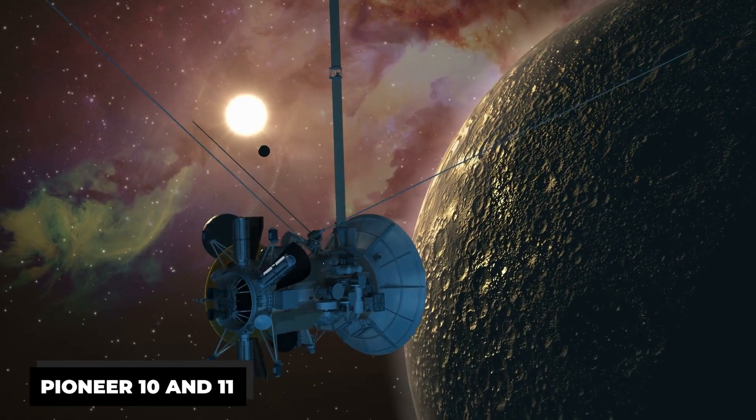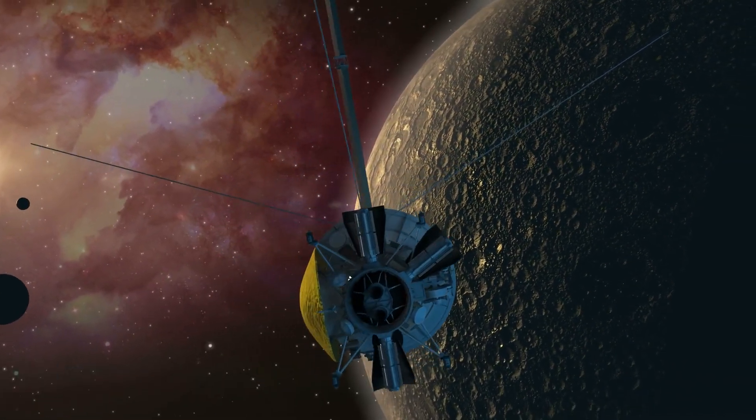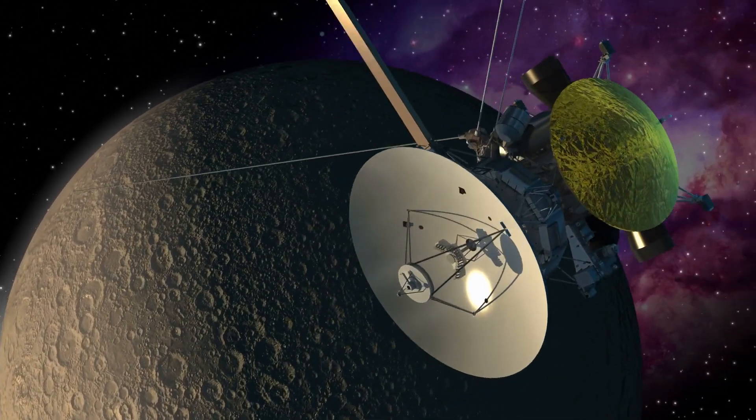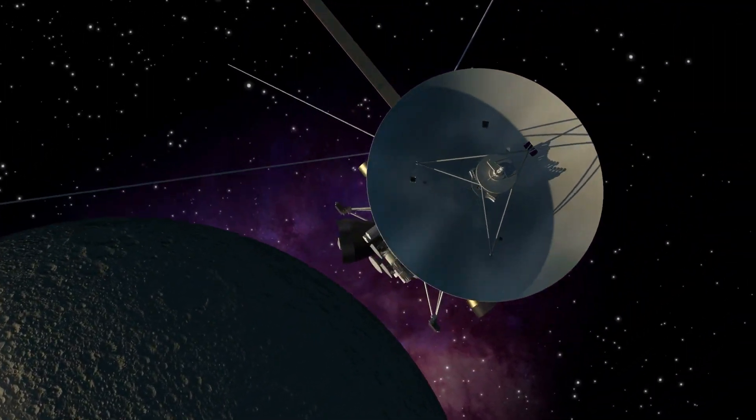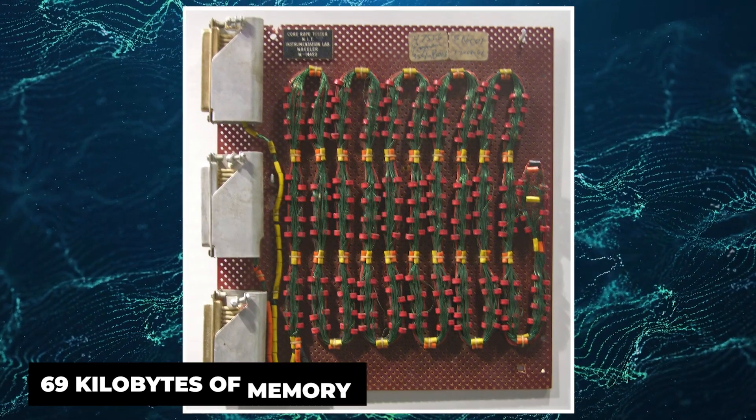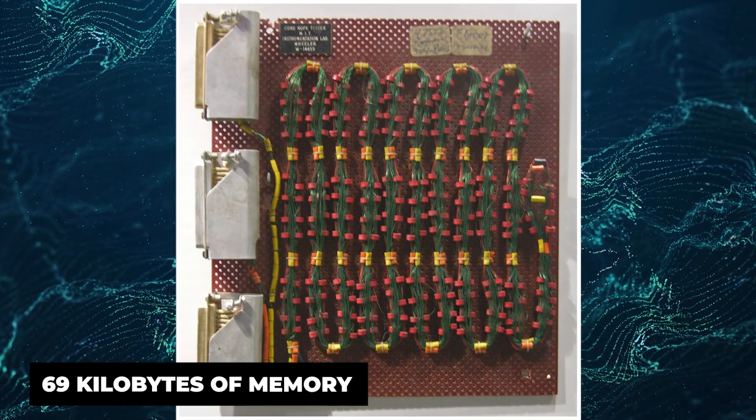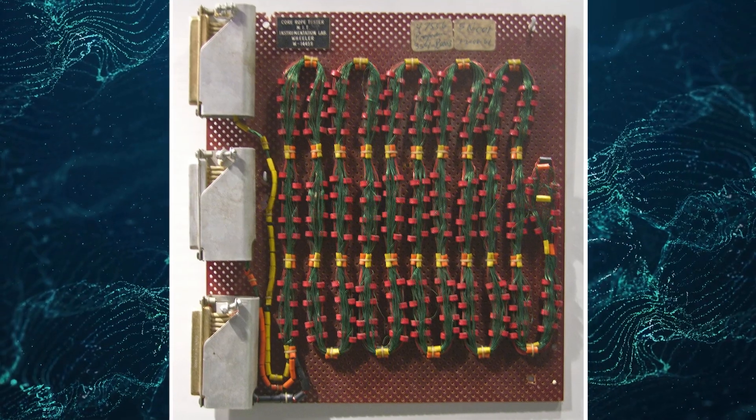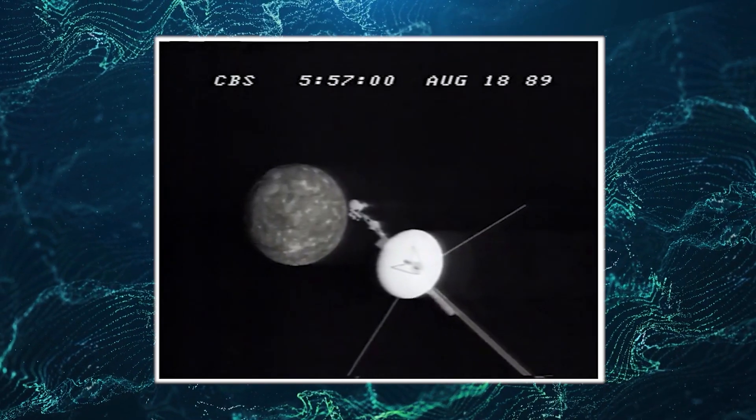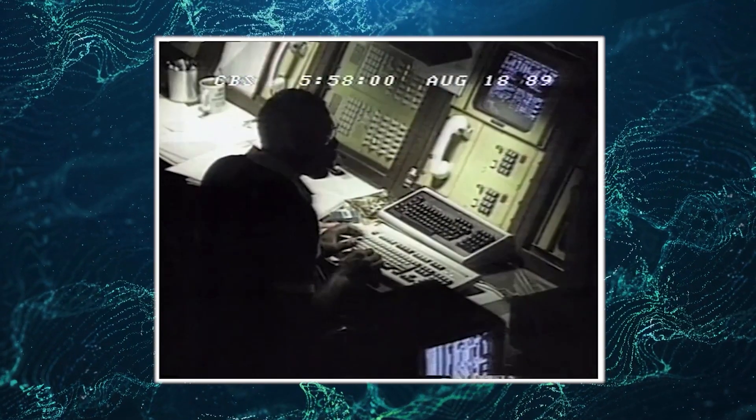In the 1970s, Pioneer 10 and 11 successfully passed through the supposedly dense asteroid belt, setting the stage for Voyager's mission. But Voyager faced more challenges. Equipped with only 69 kilobytes of memory, equivalent to a tiny fraction of a smartphone's capacity, the spacecraft's computers had to rely on their onboard intelligence to handle the complexities of the expedition.